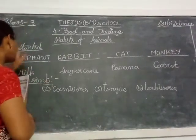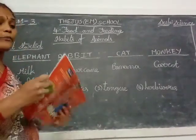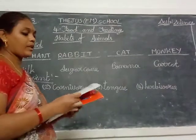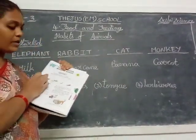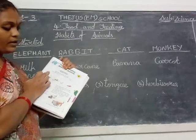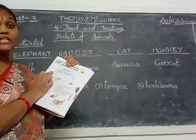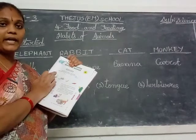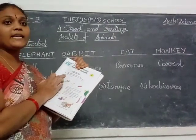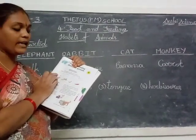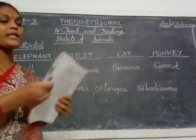Ok, get started in your textbook page number 125. In page number 125, get started is there children. Here, the animal names are given in jumbled letters. So you write those letters correctly and write that animal name. I will write that one down.